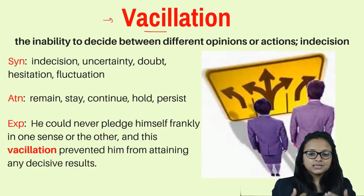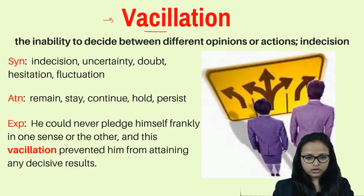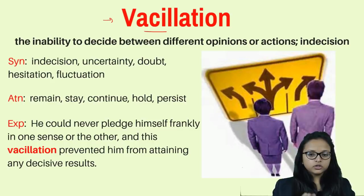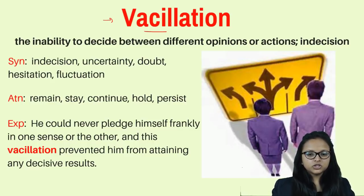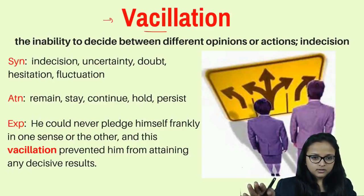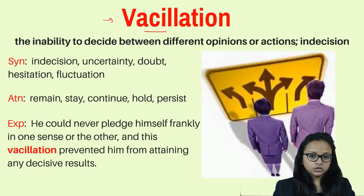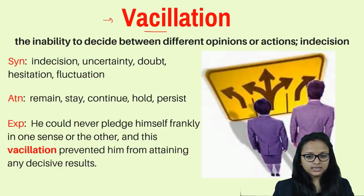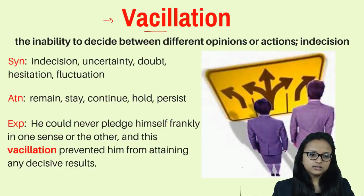Vacillation is when you are unable to decide which path to choose. You have many options in front of you and you are still thinking which option you are going to pick. Basically, vacillation is like moving here and there without any particular decision — your inability to decide between different opinions, actions, and decisions.